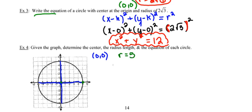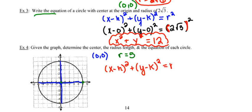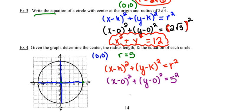The length of the radius I'll determine by counting the number of boxes between the center and any point on the circle — in this case, it's 5. Using the center and radius in the formula: (x minus 0) squared plus (y minus 0) squared equals 5 squared, which simplifies to x squared plus y squared equals 25.